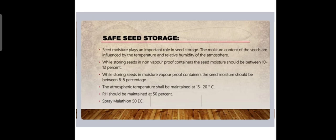While storing seed in moisture vapor proof containers, the seed moisture should be between 6-8%. The atmospheric temperature shall be maintained at 15-20 degrees Celsius. Relative humidity should be maintained at 15% and spray malathion 50 EC. These precautions should be kept in mind.